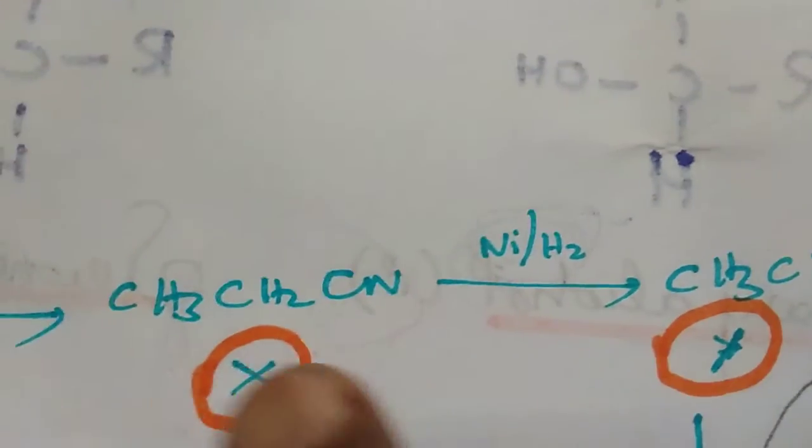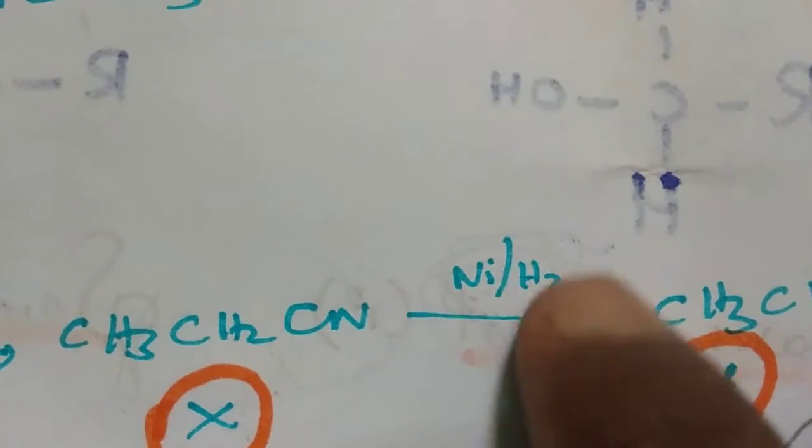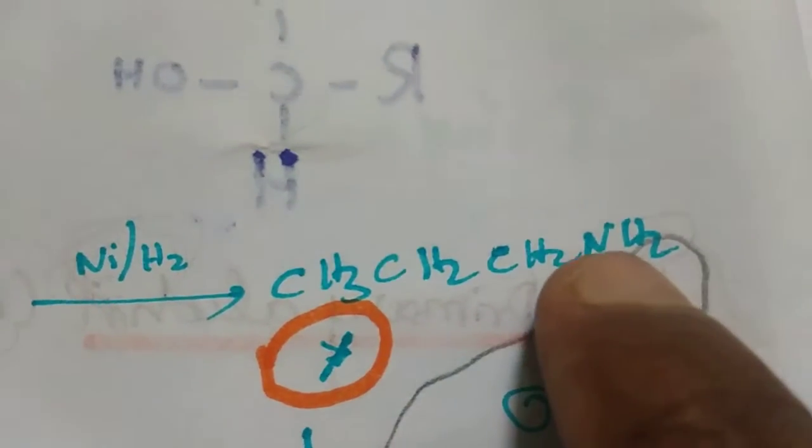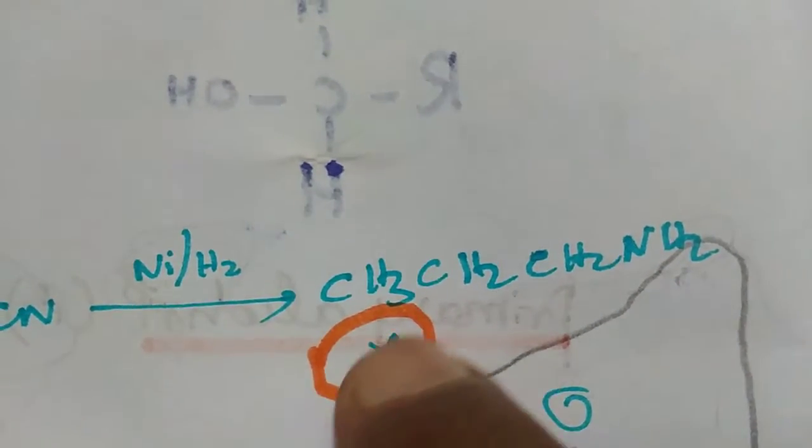Next one is, ethyl cyanide is reacted with hydrogen molecule in the presence of nickel catalyst to form 1-aminopropane. This is the Y-compound.